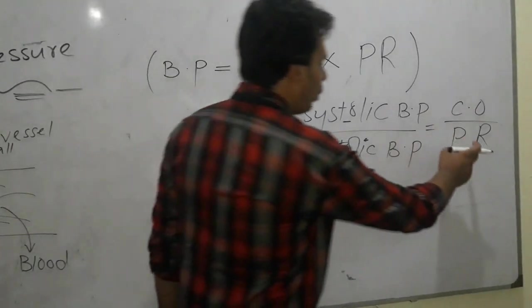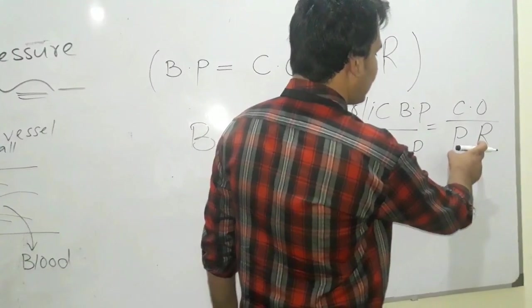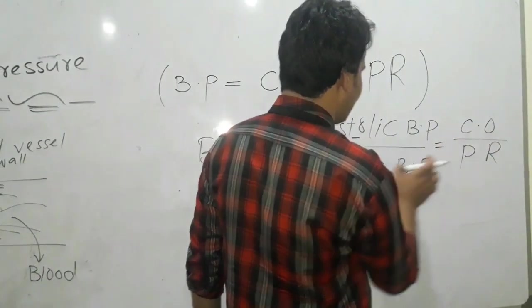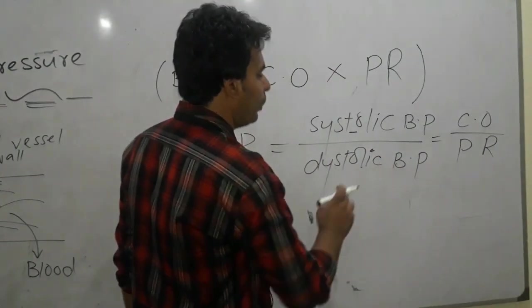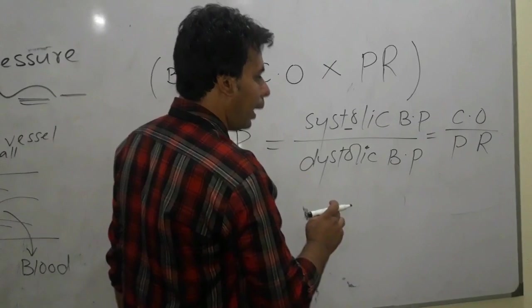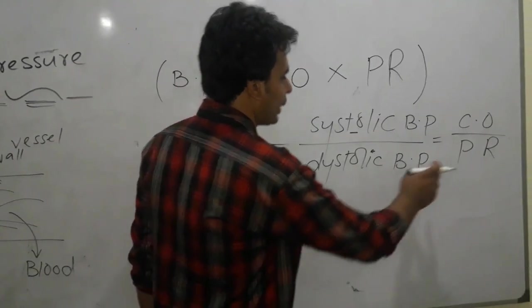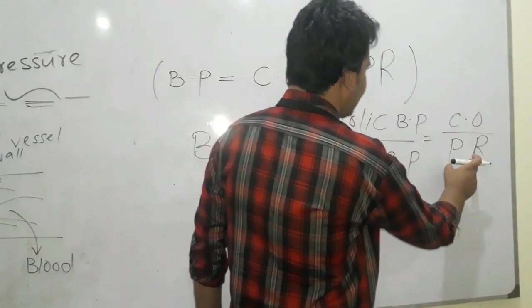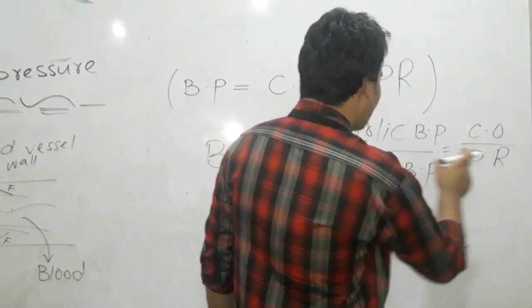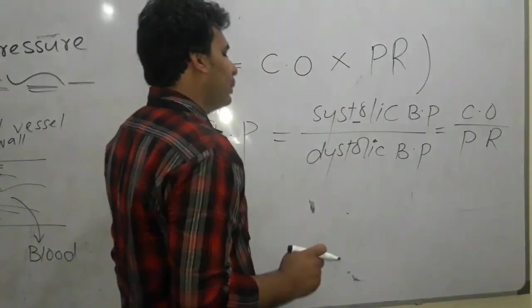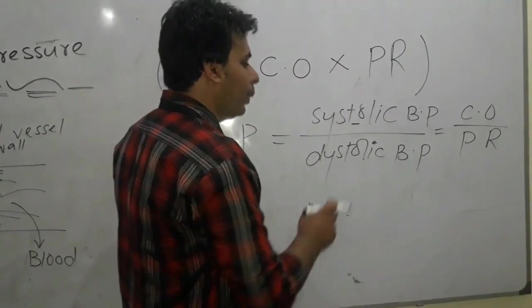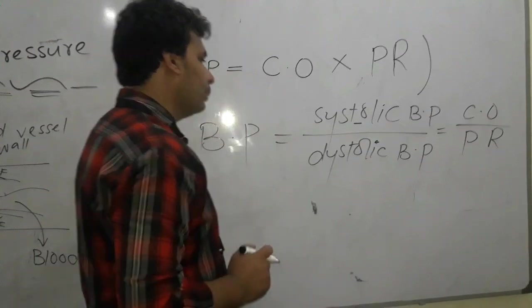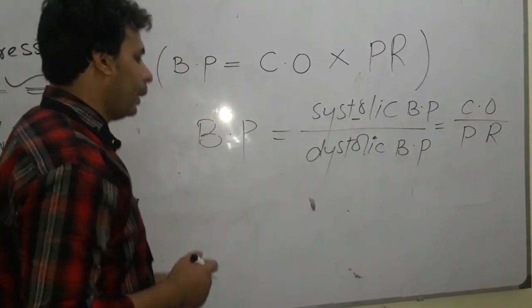Peripheral resistance has a direct relationship with your diastolic BP. If the peripheral resistance is high or greater, the diastolic BP will be high or greater. But if the peripheral resistance is less, the diastolic BP will be less.